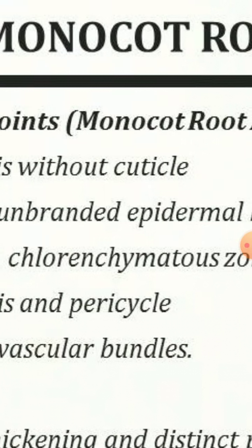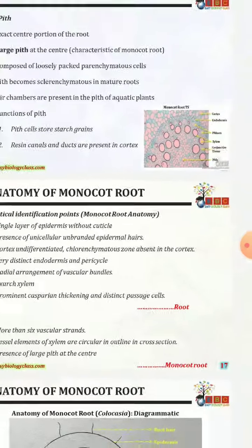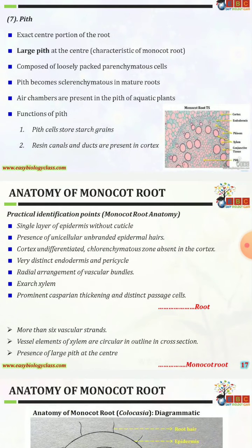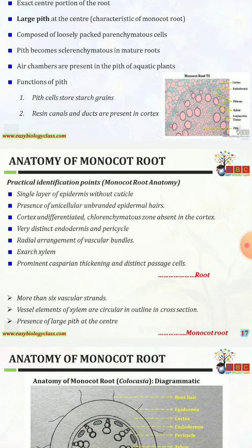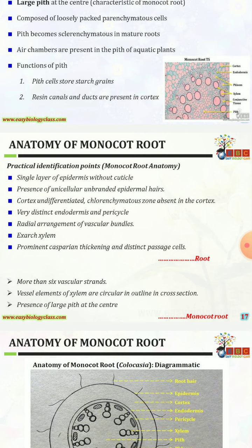The seventh part is the pith. The exact center portion of the root is known as pith. A large pith at the center is a characteristic of monocot roots. It is composed of loosely packed parenchymatous cells; pith becomes sclerenchymatous in mature roots. Air chambers are present in the pith of aquatic plants. Functions: cells store starch grains; resin canals and ducts are present in the cortex.